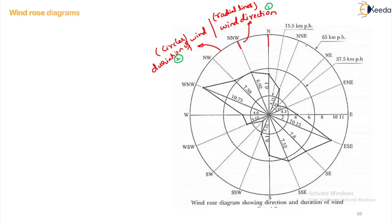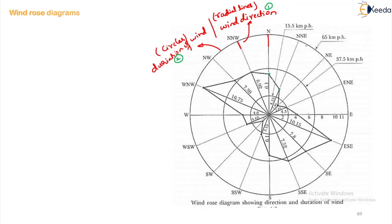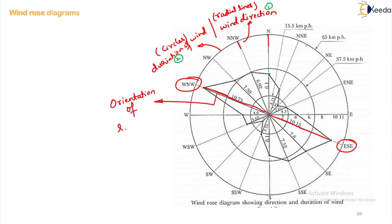Along the north direction, 6.1 is plotted. Likewise, for NNW the value is 4.15, and you go on plotting for every direction and then connect the points with straight lines. The best direction of the runway is indicated along the direction of the longest line on the wind rose diagram. In this diagram, WNW (west-north-west) and ESE (east-south-east) is the direction of the longest line, so this should be the orientation of the runway according to the Type 1 method.